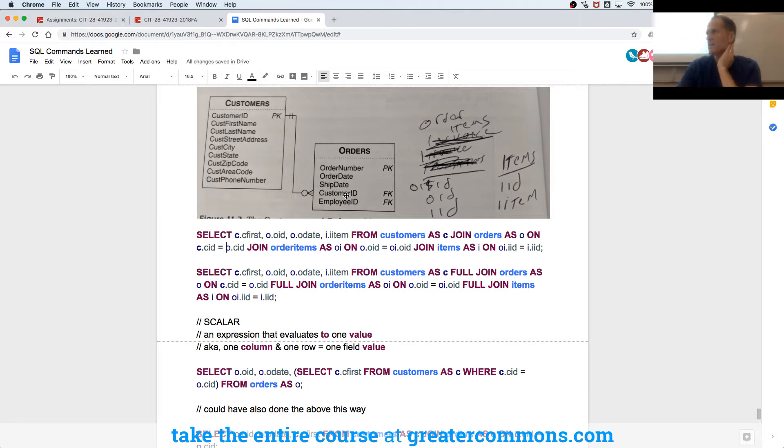But, and then we join Order Items, as OI, on OOID, right, which is the Order ID, is equal to Order Item OID. And then we join Items, as I, on Order Item ID, right, which is this Order Item ID.